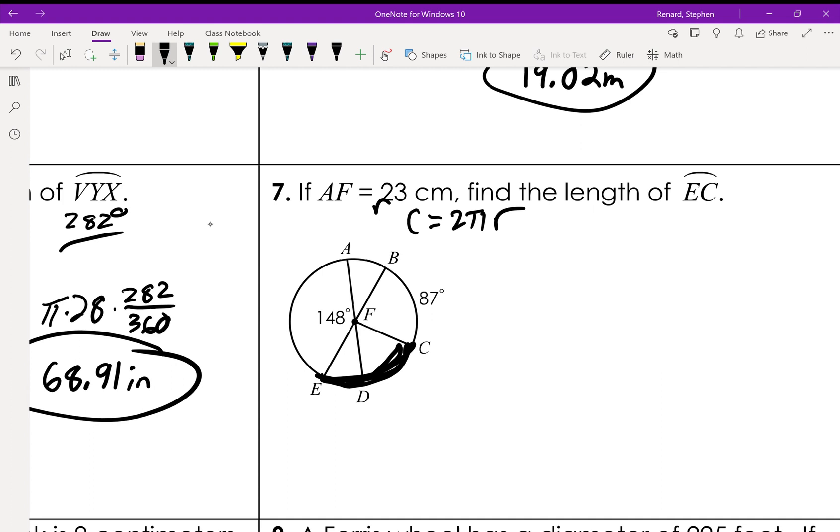So we know that AFE, this right here is 148. We know that this part right here is going to be 180 degrees. 180 minus 148 is 32 degrees. Okay. Now here's the tricky part. I know that this right here is actually going to be 148 as well, because it is opposite of this. So this right here and this right here are actually vertical angles. BFD and AFE are vertical angles.